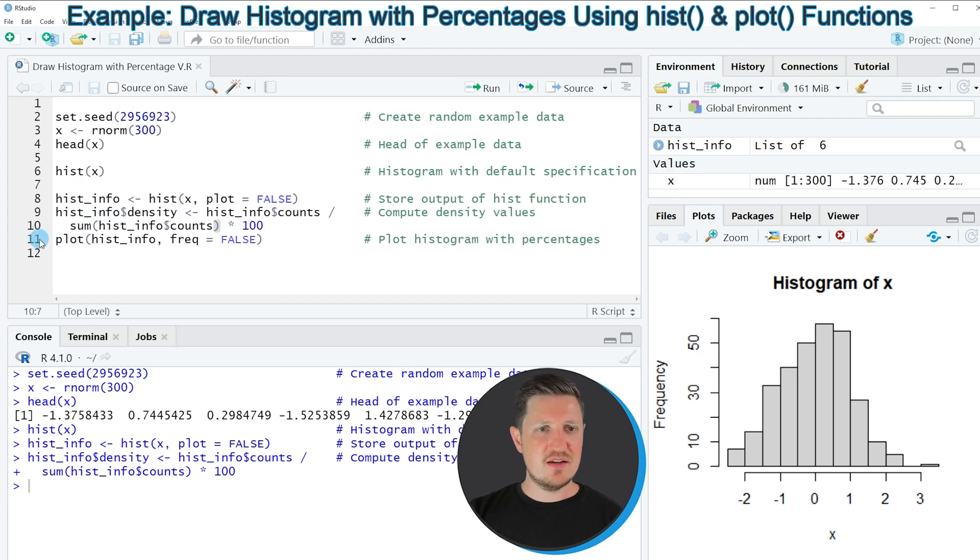And then in line 11 of the code we are using this info object to plot our data once again. And within the plot function we are also specifying the freq argument to be equal to false.